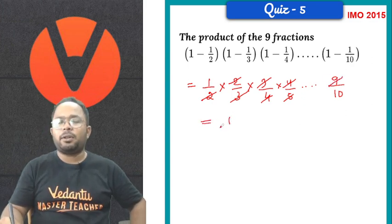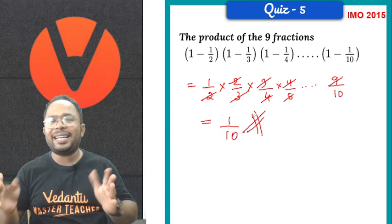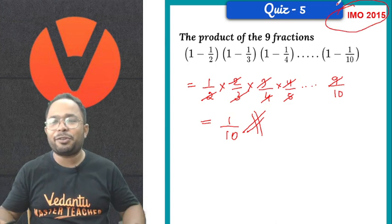So, what you look here is 2, 2 gets cancelled, 3, 3 gets cancelled, 4, 4 gets cancelled. So, 5 will be also cancelled with a number which will be coming. So, similarly, 9 will also get cancelled. So, what is left? On the numerator 1, denominator is 10. So, this is our right answer, 1 by 10.